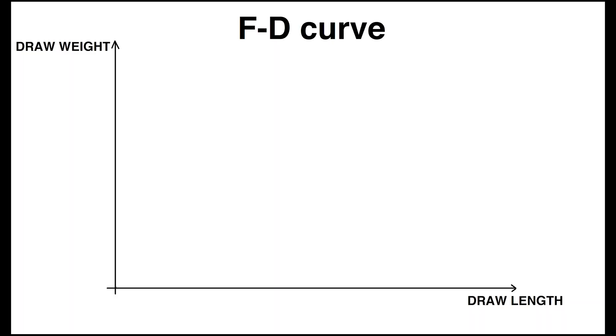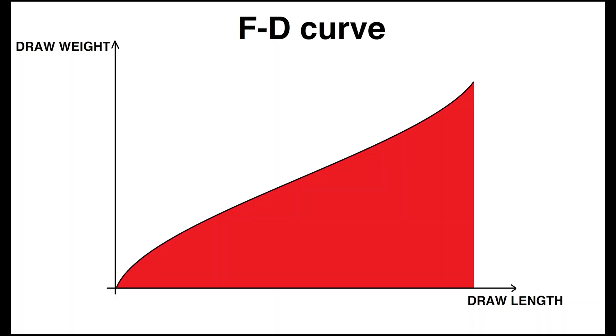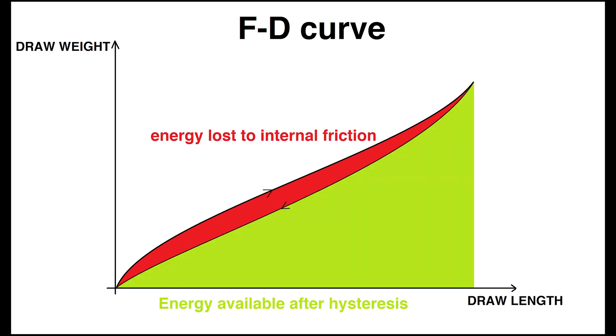Forced Draw Curves. The forced draw curve of a bow is the best way to depict bow energy. The area below the curve is the energy stored in a bow. The kinetic energy of the arrow will differ.